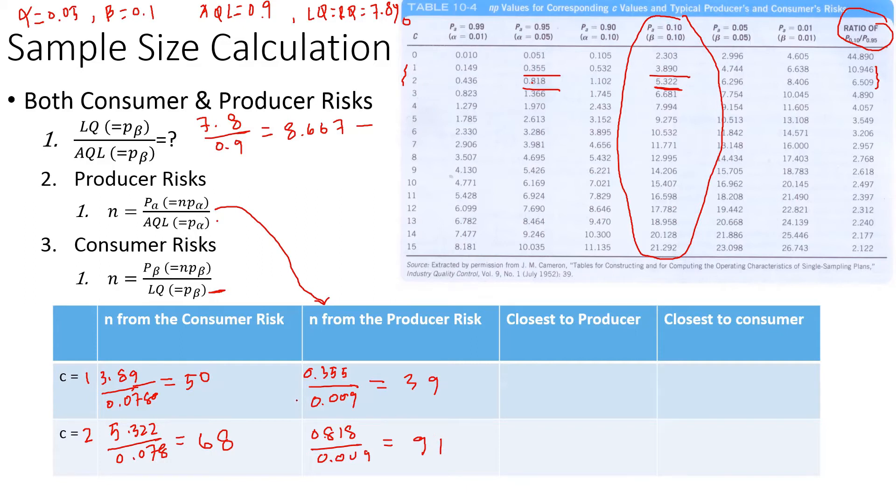Now there are criteria to decide which sample size to use based on these four plans. The four plans are: C=1 with n=50, C=1 with n=39, C=2 with n=68, and C=2 with n=98. One approach is to pick the minimum sample size, which is 39 with C=1. Another is to pick the maximum sample size. This depends on various tradeoffs.